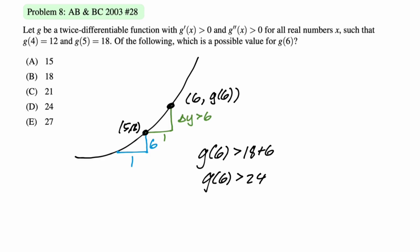And so g of 6 has to be greater than 24. There's no choice. Ooh, I circled the wrong one. I circled 24, that's a mistake. I guess I wouldn't be getting 100 on the AP exam. That's our answer. Because we have to be greater than 24. All right. Let's take a look at another one. We got two more to go.